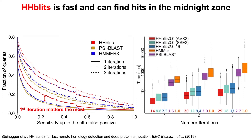From a speed perspective, HHBlits is fast — faster than PsiBlast and HMMER by maybe an order of magnitude or so — but it's still not really fast enough for metagenomic scale.